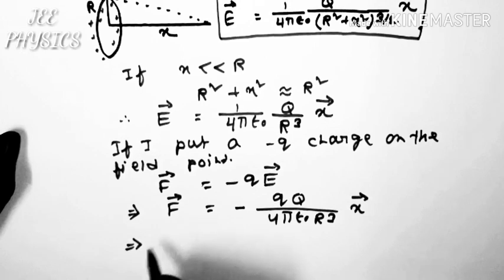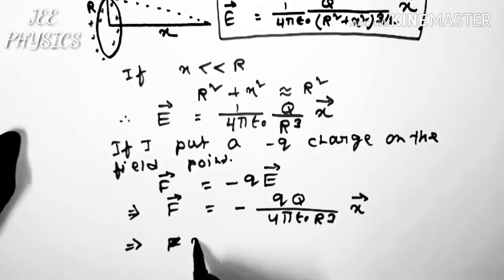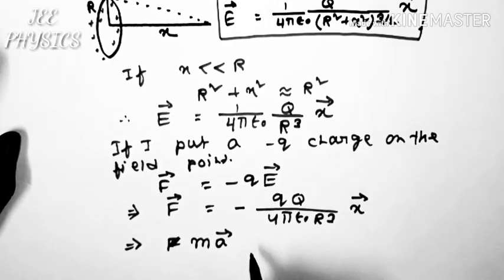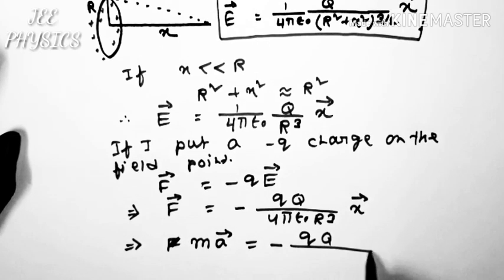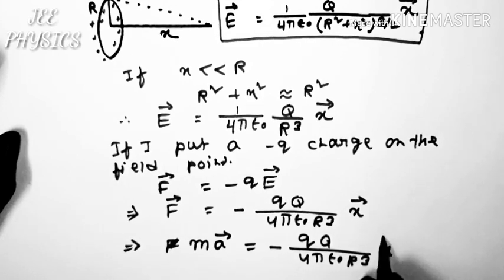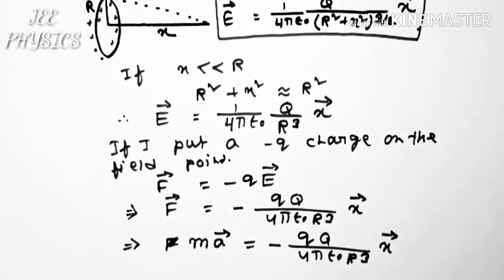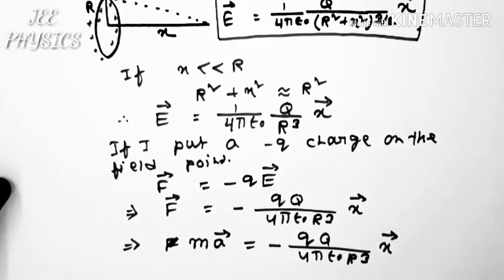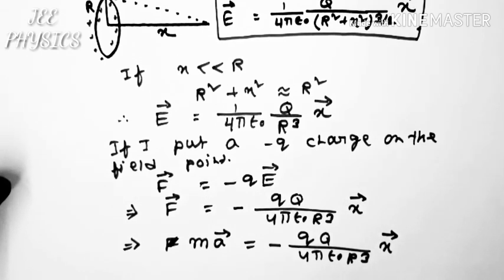Now if I put f equal to minus q into x, then I get acceleration of the charge particle a and mass m. The acceleration due to this force into mass equal to q q by m 4 pi epsilon naught into r cube into x. x is the displacement of the particle from the center of the ring.